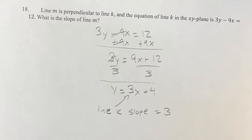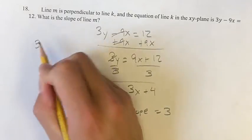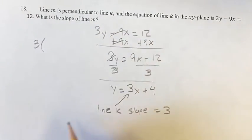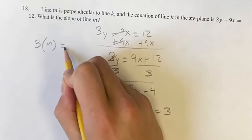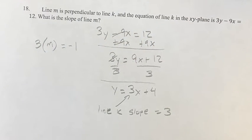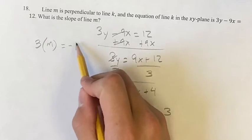So what does it mean for the slope of line m to be the negative reciprocal of that? That means that if you take 3 and you multiply it by the slope of line m, they're going to equal negative 1. The reciprocal, just the normal reciprocal, they would multiply to 1.